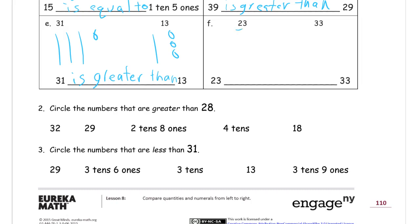For F, 23 is two tens and three ones. So it's two tens and one, two, three ones. And 33 is three tens and three ones. So that's one, two, three tens and one, two, three ones. 33 has more tens, and if it's got more tens, it's greater.